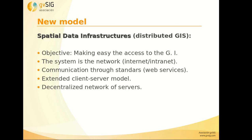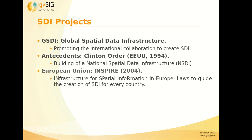At this moment the current model is the spatial data infrastructures or distributed GIS. The objective is to make easy the access to the geographic information, and all of that based on the network, internet or intranet. So it uses web services through different standards to avoid problems accessing to the different cartography. The model is an extended client-server with a decentralized network of servers. There are several main projects, in the USA for example the Clinton order, or INSPIRE in the European Union, to keep the cartography joined between the different countries of the European Union.